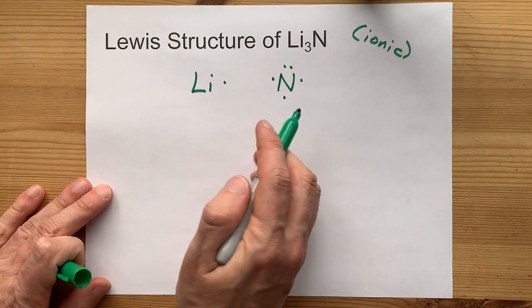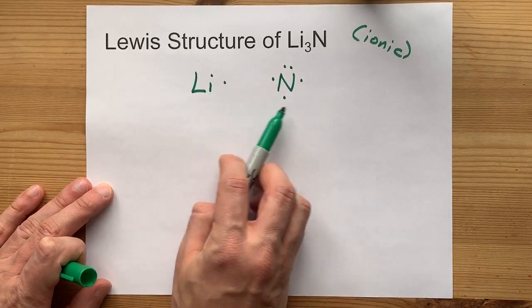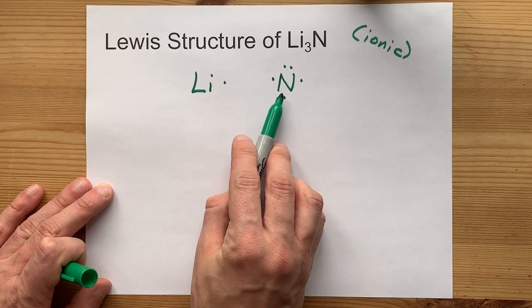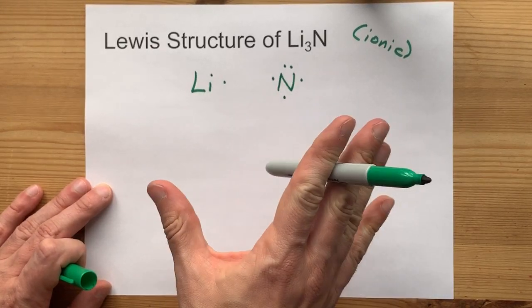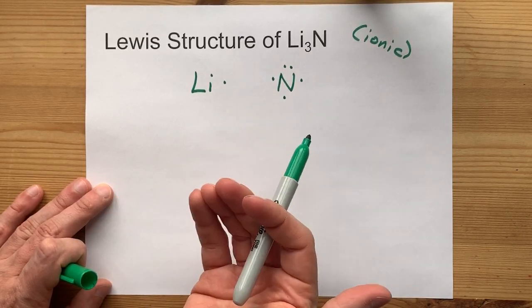Again, metals give their electrons away to non-metals. And non-metals want a full outer shell. That means eight electrons. Octet rule.